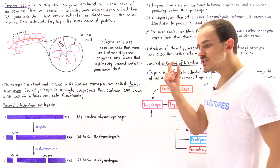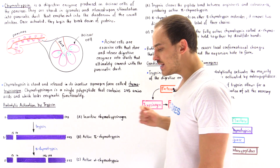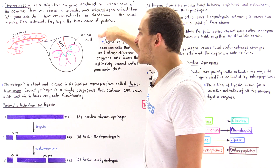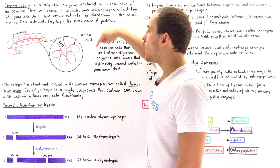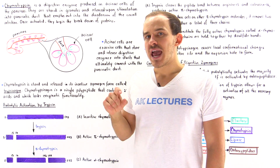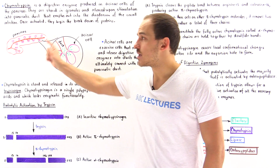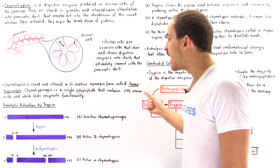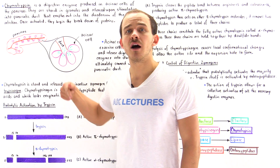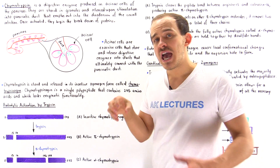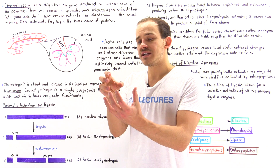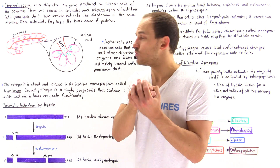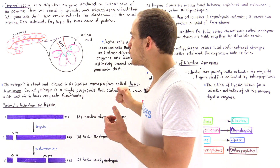In the pancreas, we find special exocrine cells known as acinar cells. It is the acinar cells of the pancreas that are responsible for forming chymotrypsinogen as well as other digestive zymogens. All these zymogens are stored in membrane-bound organelles — membrane-bound granules shown in green.